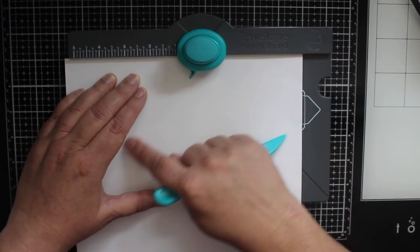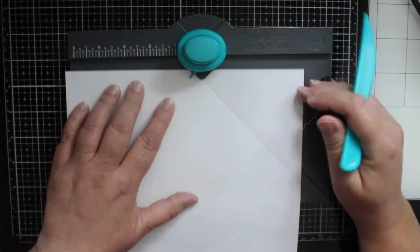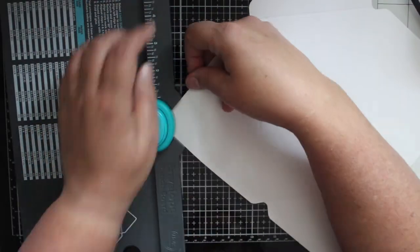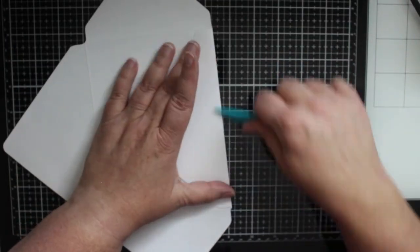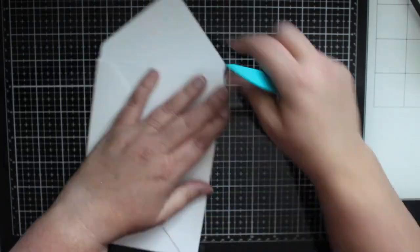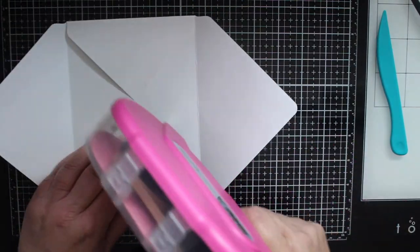Then just like before I'll rotate the paper a quarter turn to the left and line up the score line with the blue tab and score again remembering to punch as I go. I'll round my corners on the flaps once again for a nice finished look. I'll turn the paper over and fold and score all sides. A little adhesive like before and my envelopes are done!